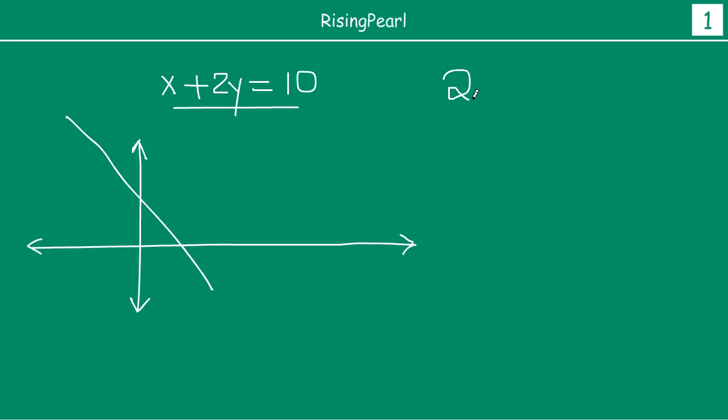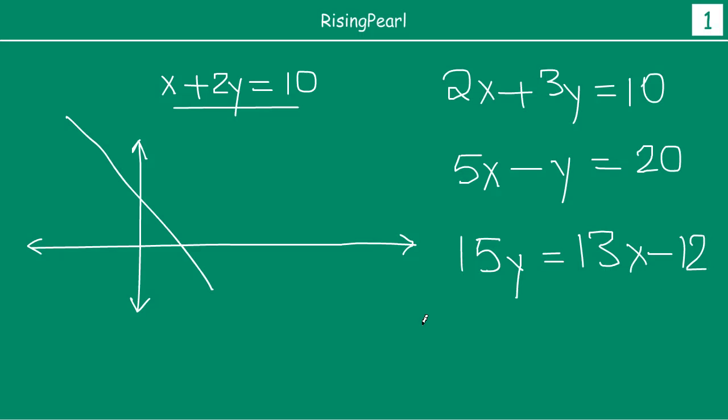Now, instead of this, if you would have taken another example, like 5x minus y equals 20, or if you would have taken the example 15y equals 13x minus 12, or lastly let us take one final example 100x minus 2y equal to say 15. So randomly we have written some more linear equations in two variables. The idea is if you take each one of them and if you represent them graphically, you can see for each one of these you get a straight line.